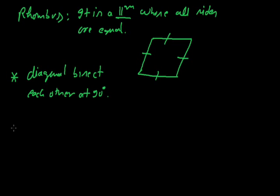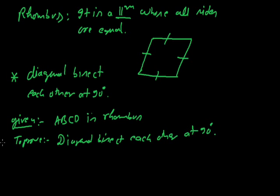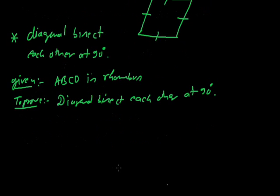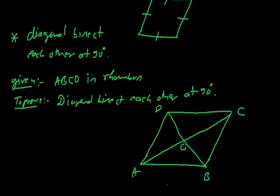Now let's see the proof. What is given to us? ABCD is a rhombus. What we have to prove? That the diagonals bisect each other at 90 degrees. Let's draw the figure — rhombus ABCD with diagonals AC and BD. Let the point of intersection be O.